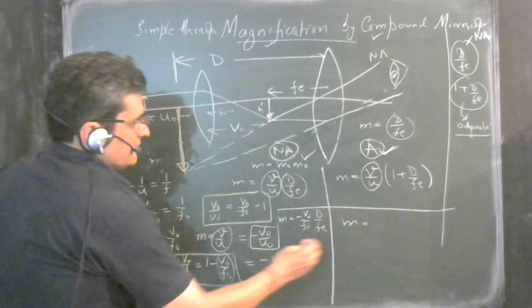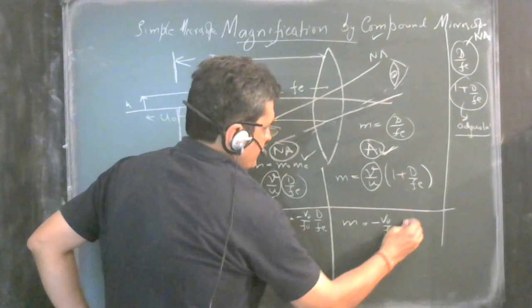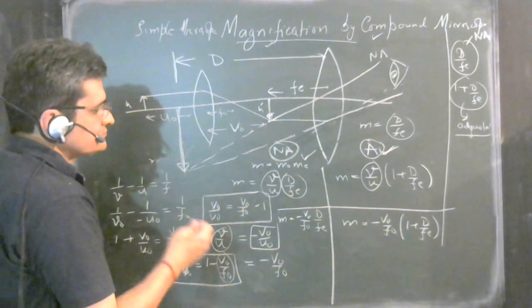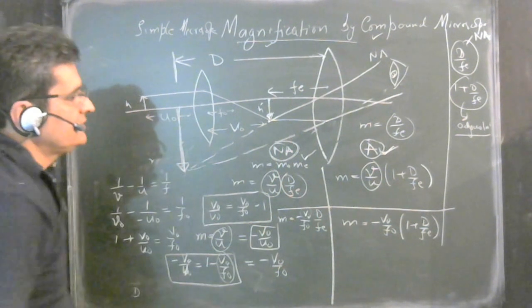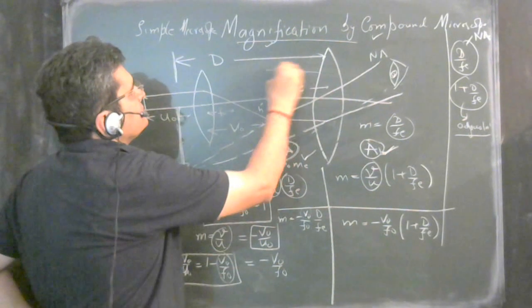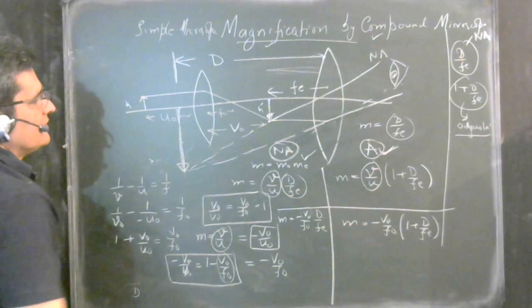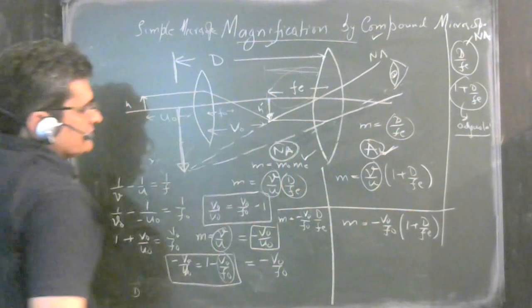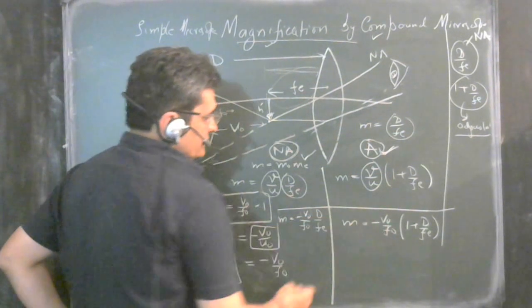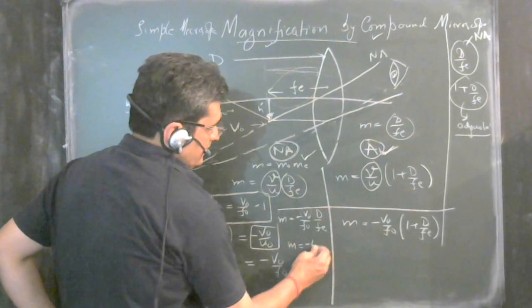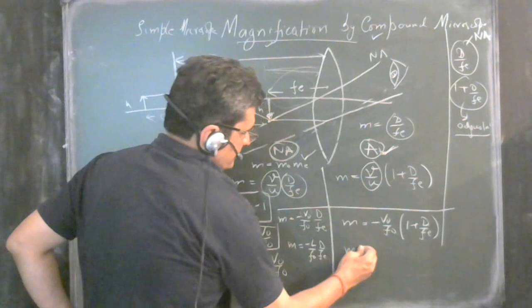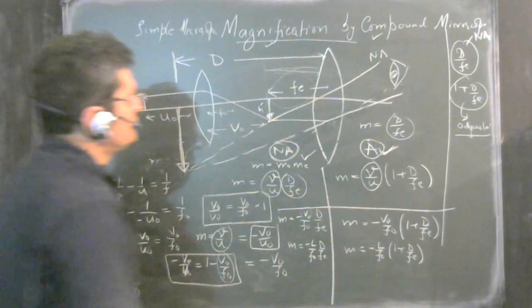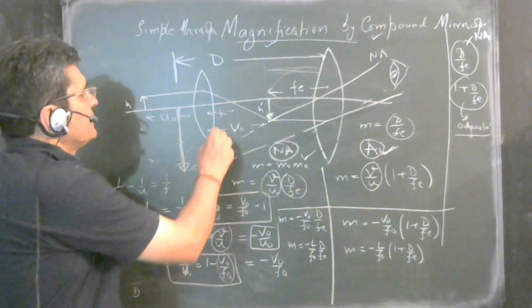Substituting back, the total magnification formulas become: for normal adjustment, M = −(vo/fo) × (D/Fe); and for adjustment, M = −(vo/fo) × (1 + D/Fe). We take vo as the tube length L, because it is approximately equal to the tube length.